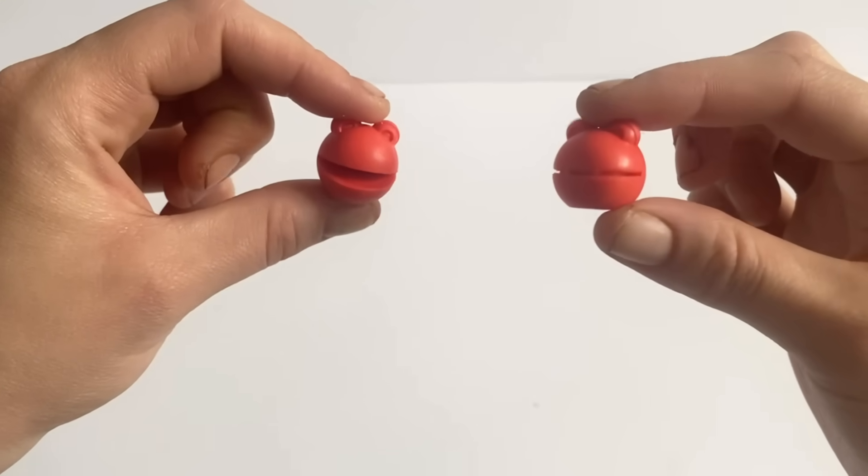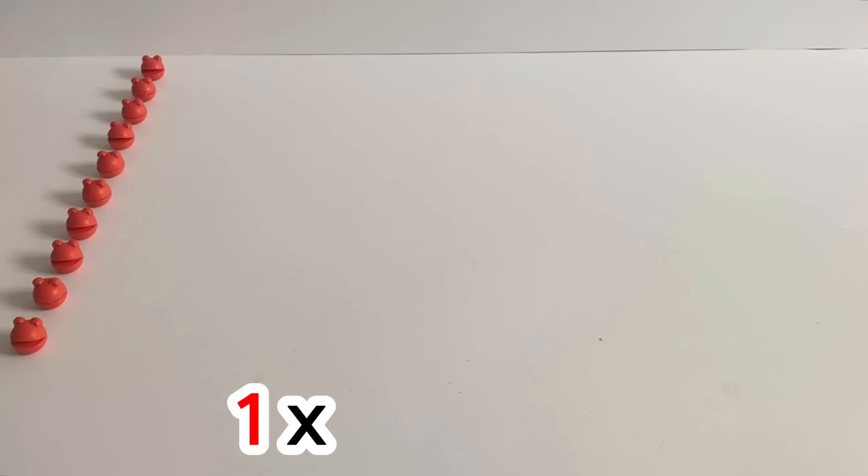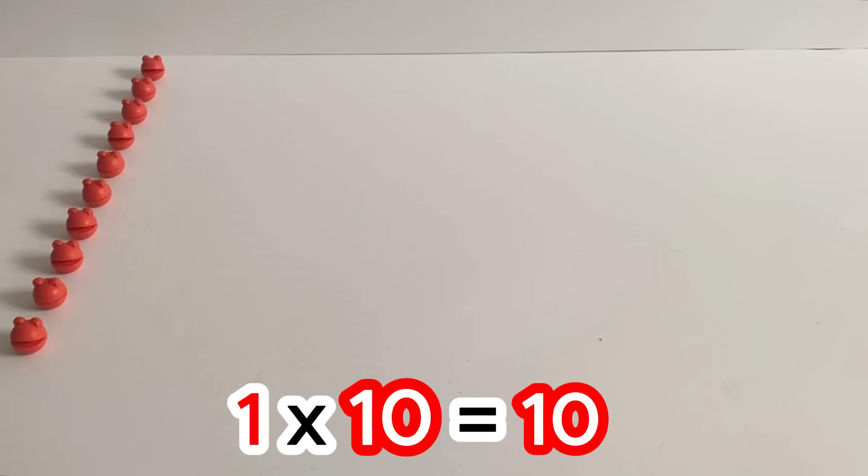We are going to see how many pieces we have. 1, 2, 3, 4, 5, 6, 7, 8, 9, 10. Ten Red Number Blobs — 1 times 10 equals 10.